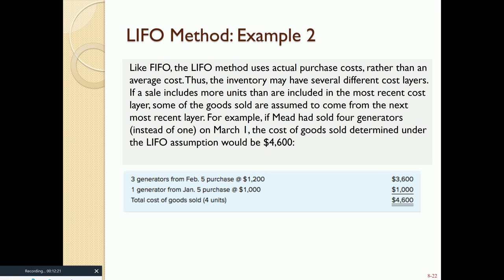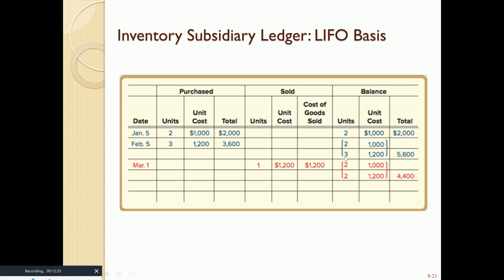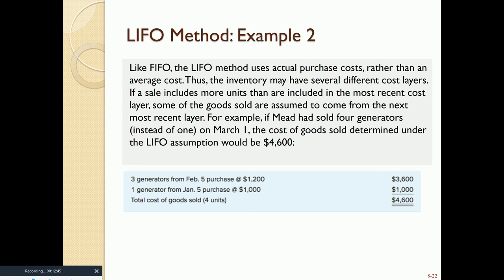In the second LIFO example, if we sell four units instead of one, we start from the most recent layer. All three from the February 5th purchase at $1,200 are sold, then one from the oldest layer. Our cost of goods sold is $4,600, and only one unit from the January 5th purchase remains in inventory.